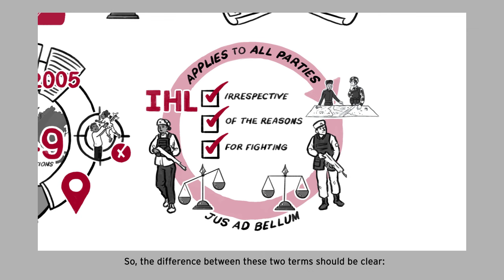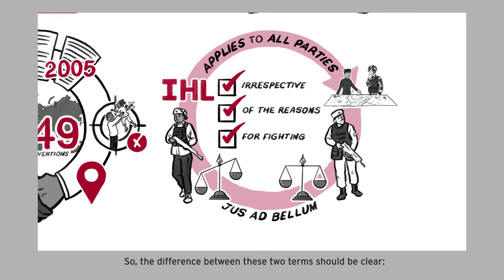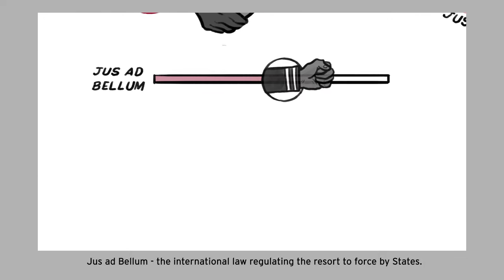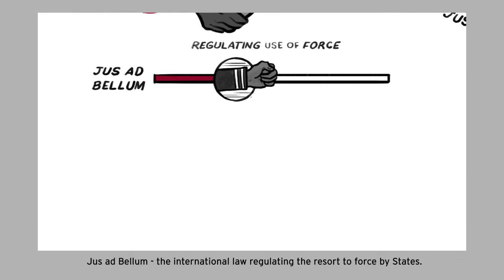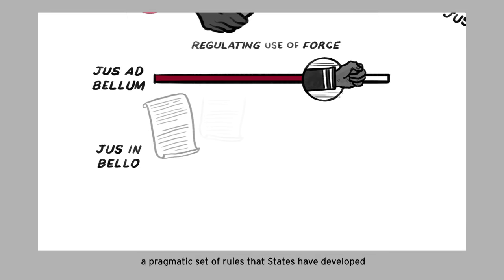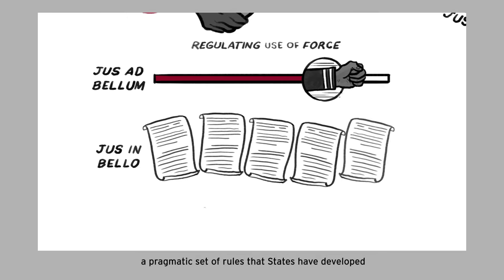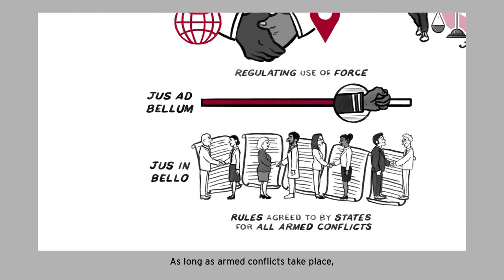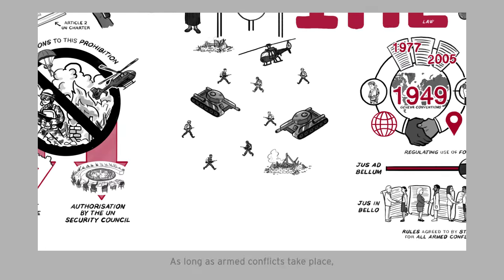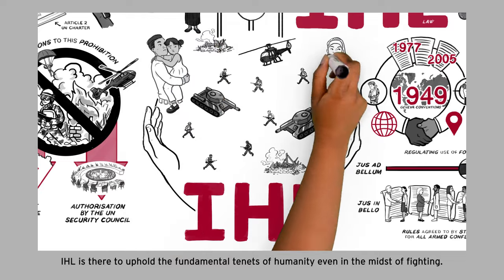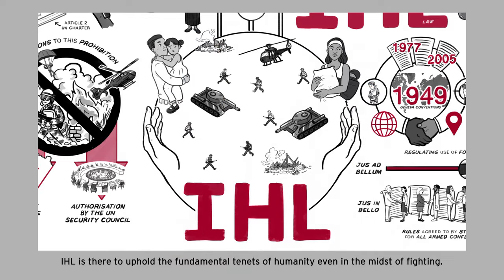So, the difference between these two terms should be clear. Jus ad bellum: the international law regulating the resort to force by states. Jus in bello: IHL — a pragmatic set of rules that states have developed and agreed to for governing behavior in all armed conflicts. As long as armed conflicts take place, IHL is there to uphold the fundamental tenets of humanity, even in the midst of fighting.